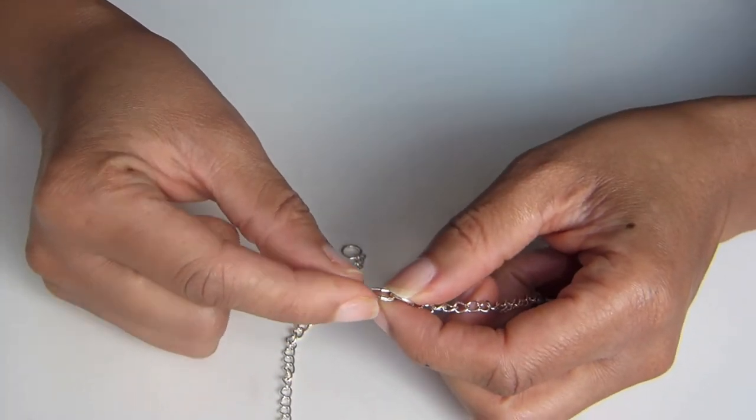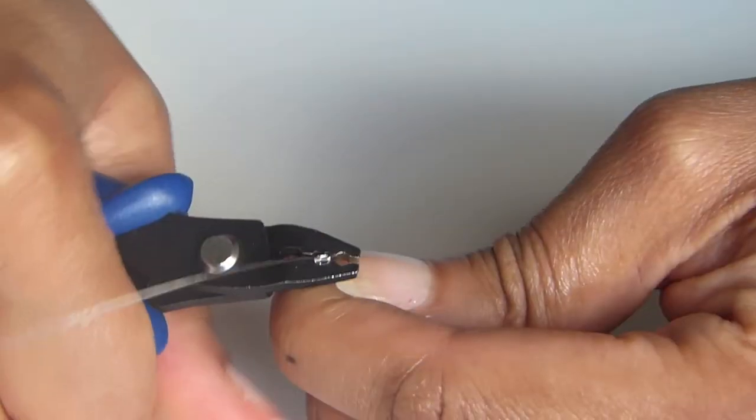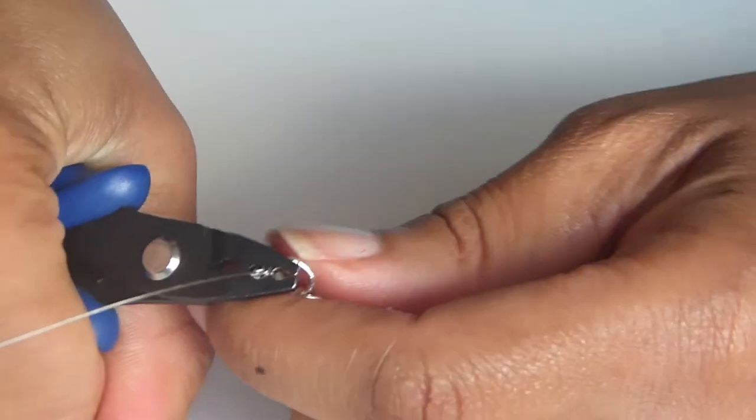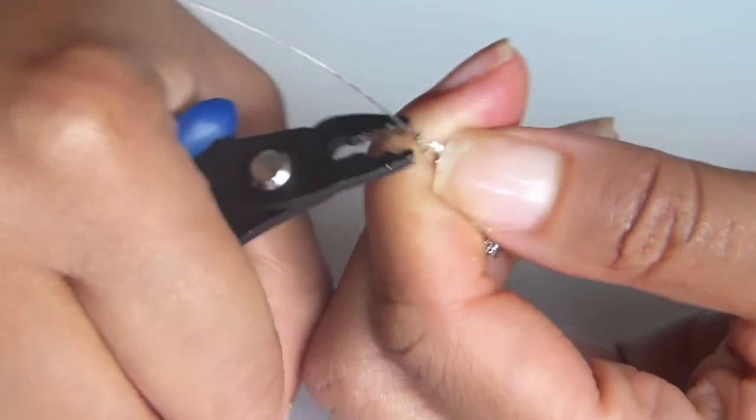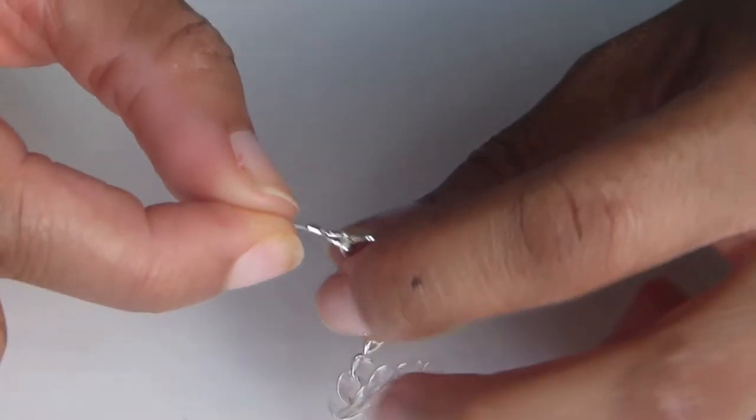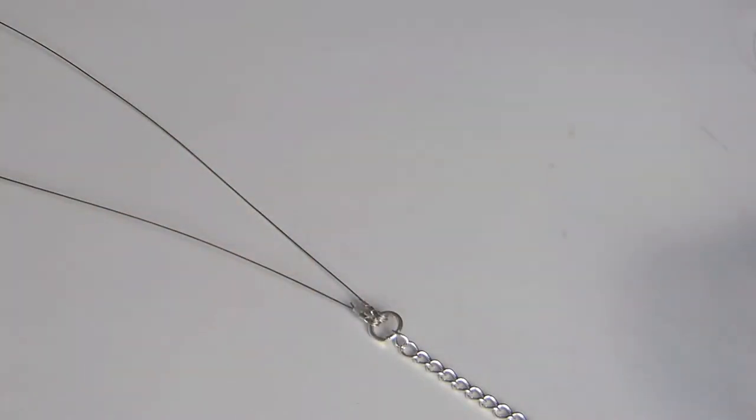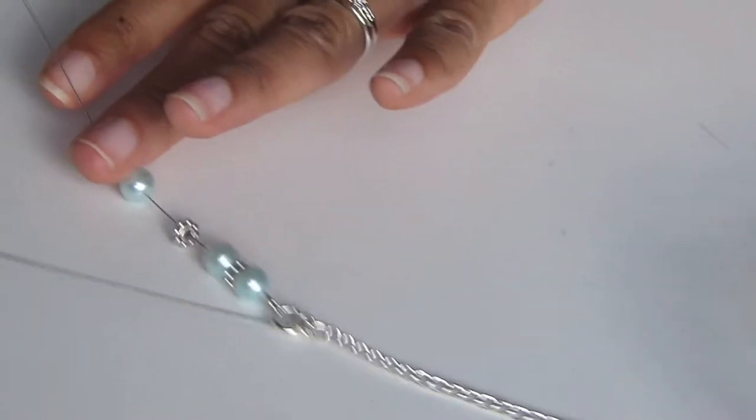Then you're going to carry a crimp bead onto that. You're going to use your crimping pliers to close and seal this crimp bead. This is where the beads will run onto. You're going to do this two times. Once that's done, you are ready to start beading.